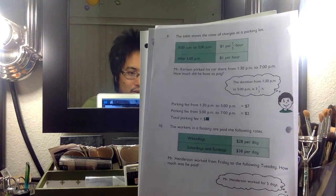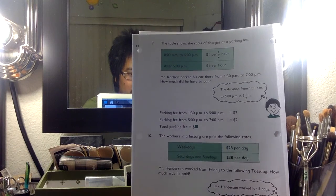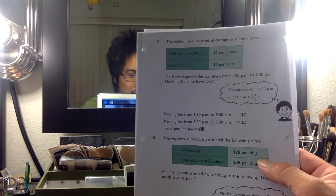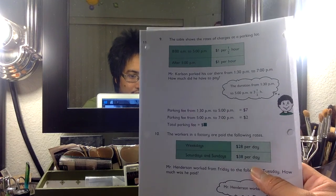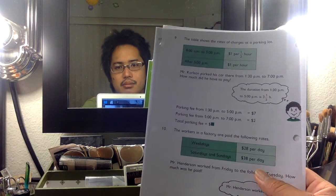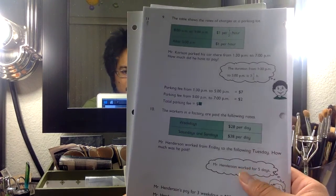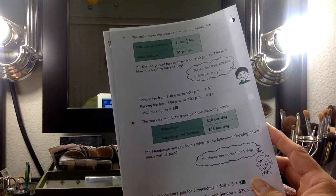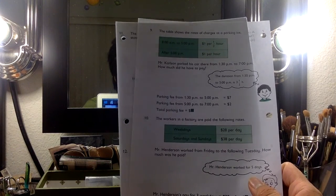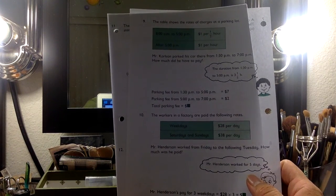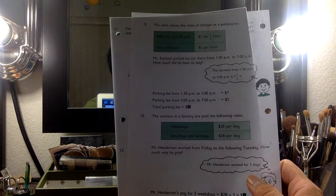Alright. The workers in a factory are paid at the following rates: $28 per day on the weekdays, $38 per day if I have to call you in and make you give up your Saturdays and Sundays. Mr. Anderson worked from Friday to Tuesday. How much was he paid?